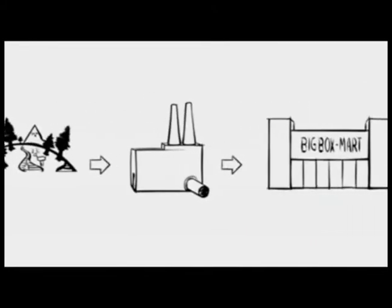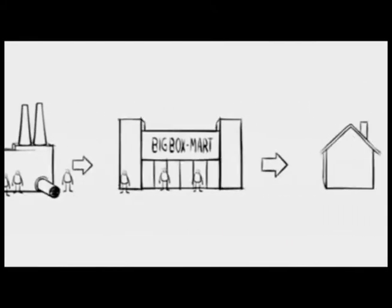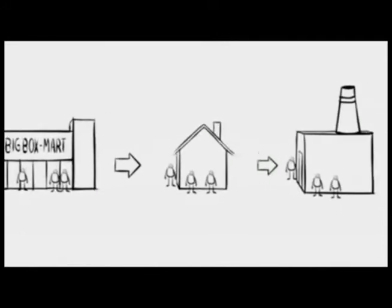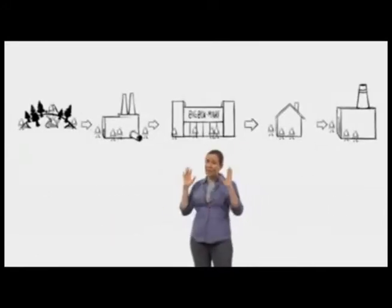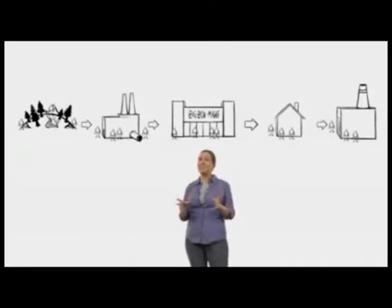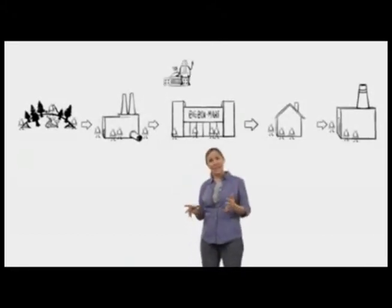Well, one of the most important things that's missing is people. Yes, people. People live and work all along this system. And some people in this system matter a little more than others. Some have a little more say. Who are they? Well, let's start with the government.